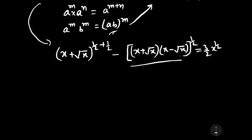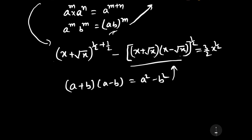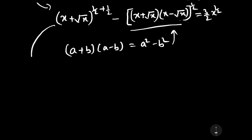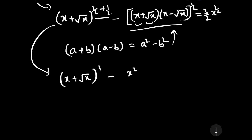To solve this term we apply the identity: (a + b)(a - b) = a² - b². Here a = square root of (x plus square root of x) and b = square root of (x minus square root of x). This gives us: (x plus square root of x)^1 minus (x minus square root of x)^1, all to the power 1/2, equal to (3/2) x to the power 1/2.